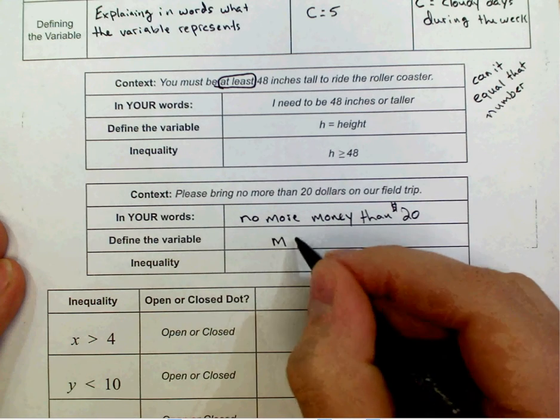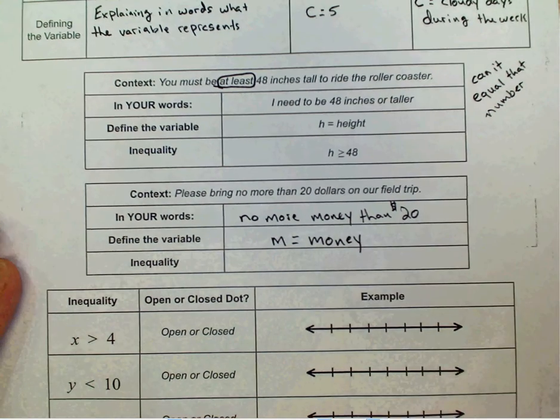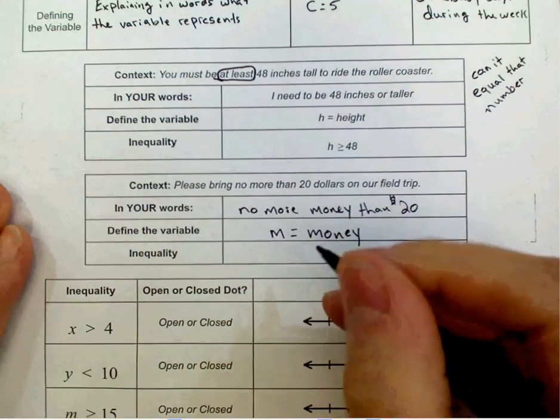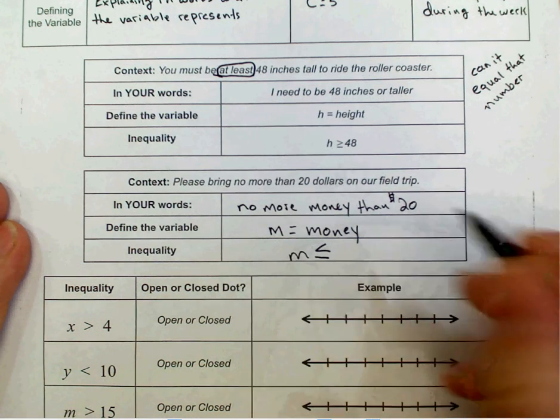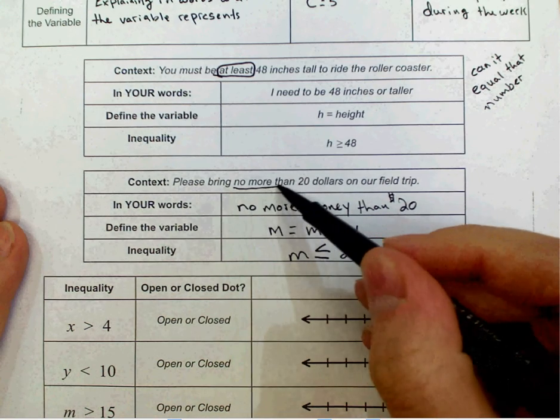Our variable is M for money. You might have done something different. You could have done the dollar sign, C for cash, whatever it is that you want to do. So our inequality is going to be M less than or equal to $20. It can be equal to because it says no more than.